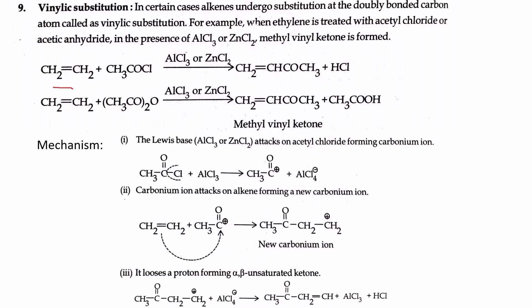Ethylene is treated with acetyl chloride or acetic anhydride, using AlCl3 or zinc chloride as a catalyst. When added, this group attaches to the double-bonded carbon — one hydrogen is substituted by this group. The hydrogen combines with chlorine to form an HCl molecule, which is eliminated, and the acyl group attaches to the carbon.